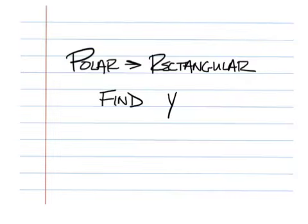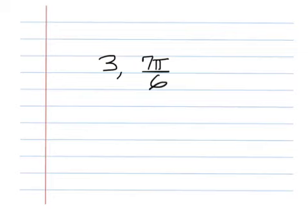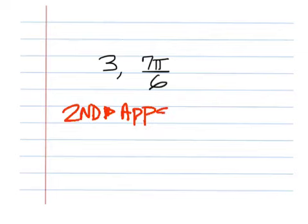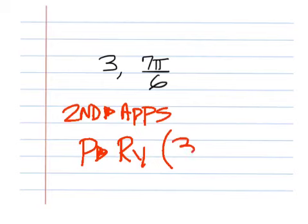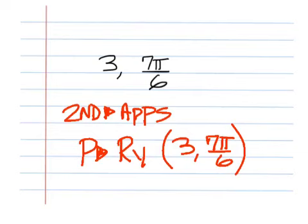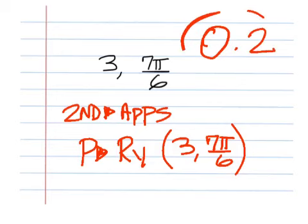Example 3: finding Y. The coordinate is (3, 7π/6). Again, hit Second and then the Apps button. The angle menu comes up — you're looking for polar to rectangular, but now you're solving for Y. That would be number 8. Type in 3 comma 7π over 6 and come back with a value rounded to the tenths place of 0.2.